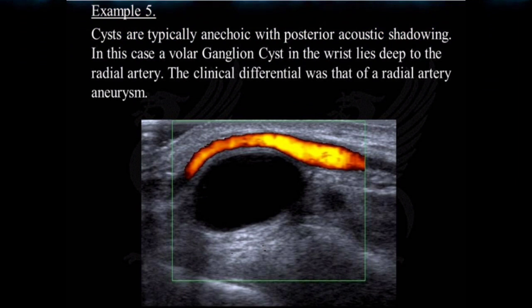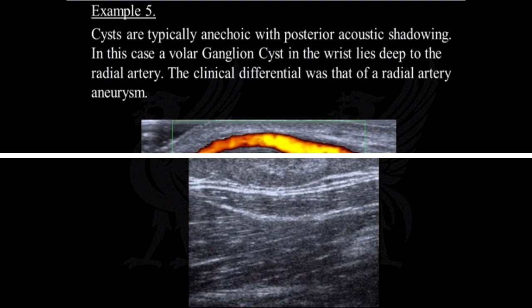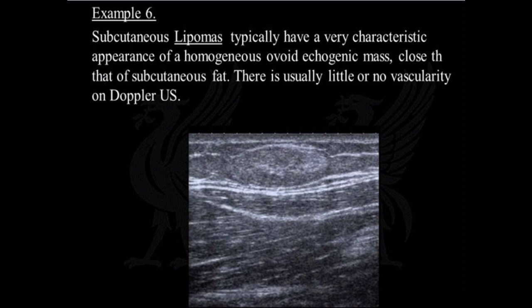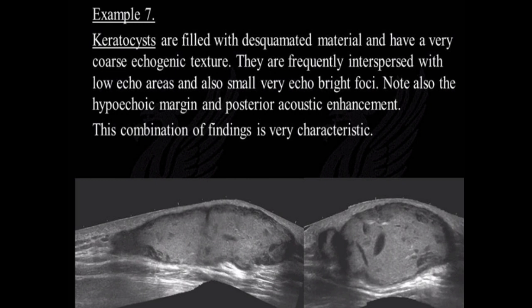Example 5: Cysts are typically anechoic with posterior acoustic shadowing. In this case, a volar ganglion cyst in the wrist lies deep to the radial artery; the clinical differential was that of a radial artery aneurysm. Example 6: Subcutaneous lipomas typically have a very characteristic appearance of a homogeneous ovoid echogenic mass, close to that of subcutaneous fat, with little or no vascularity on Doppler ultrasound. Example 7: Keratoses are filled with desquamated material and have a very coarse echogenic texture, frequently interspersed with low echo areas and small very echobright foci. Note also the hypoechoic margin and posterior acoustic enhancement — this combination of findings is very characteristic.